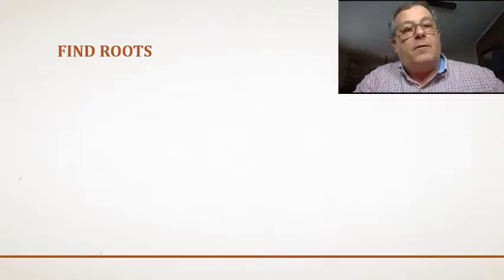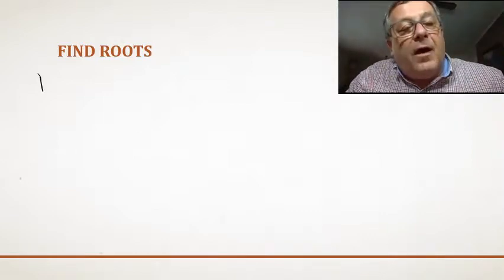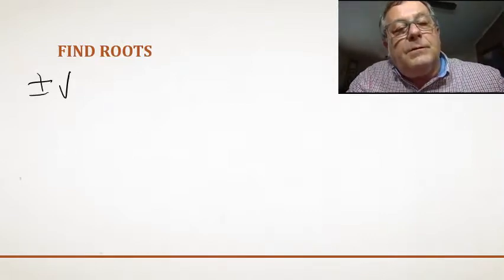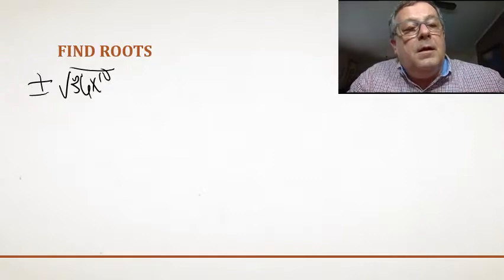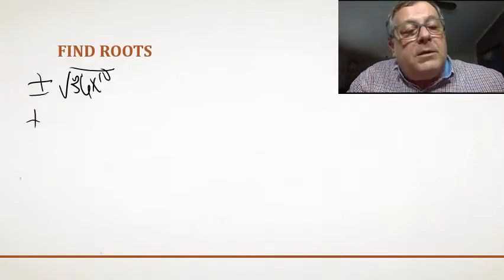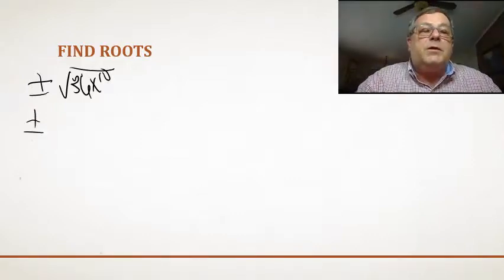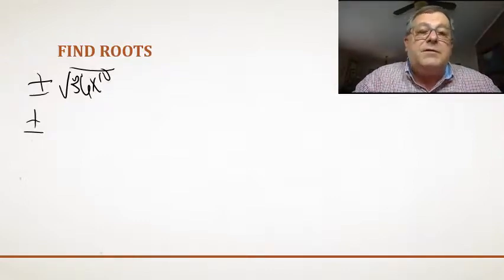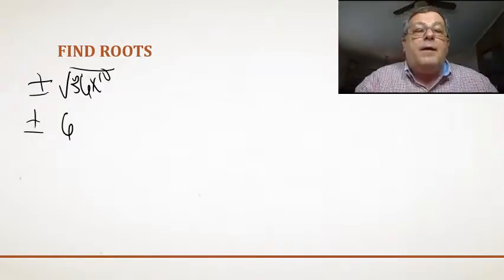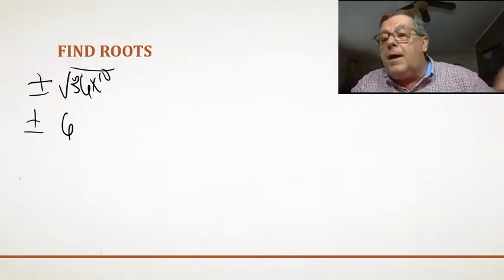Let's start. We're first asked to simplify plus or minus the square root of 36x to the 10th. We've got plus or minus. It starts off pretty easy because we can see 36 is a perfect square — 6 times 6 is 36, and negative 6 times negative 6 is also 36. So we've got a 6, but we still have to take the square root of x to the 10th.